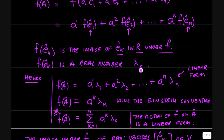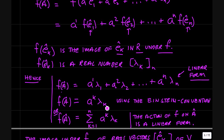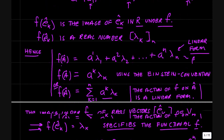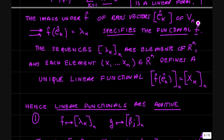If we evaluate f on the basis set, we get a sequence of real numbers lambda k. Plugging these lambda k's in for f of e sub k, we get that f of a equals the sum of products: a1 times lambda1 plus a2 times lambda2, and so on, through an times lambda n. This summation of products is called a linear form. Using the Einstein summation convention, where a repeated index upstairs and downstairs is summed over k from 1 to n, the action of f on a vector a gives you a linear form — some scalar beta.